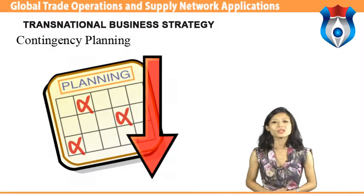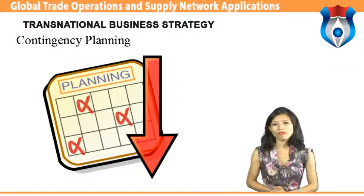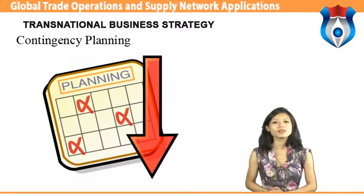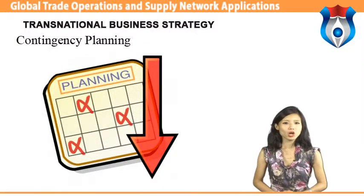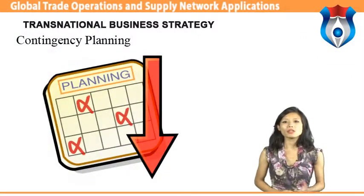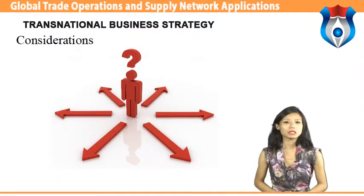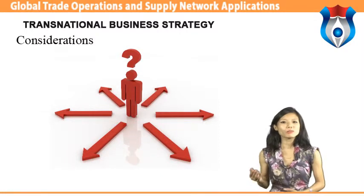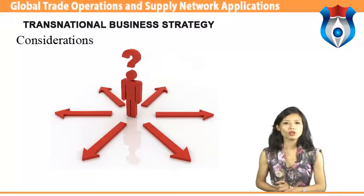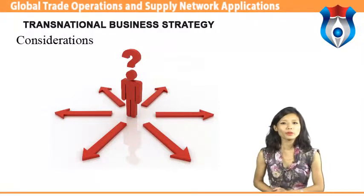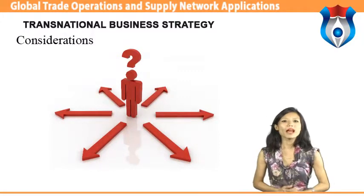Transnational strategy also includes contingency planning. Natural disasters such as the March 2011 earthquake in Japan can cause severe disruption in the supply chain. Harvard professor Willie C. Chase suggests that manufacturers and suppliers often lack contingency plans and find themselves scrambling for alternatives when disaster strikes. All people often use the terms interchangeably, but global, multinational, international, and transnational businesses have subtle differences. A multinational business operates in several foreign countries but delegates strategic decision-making responsibility to its overseas subsidiaries, which operate as autonomous businesses.